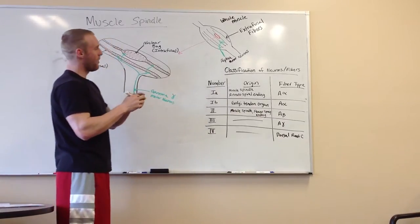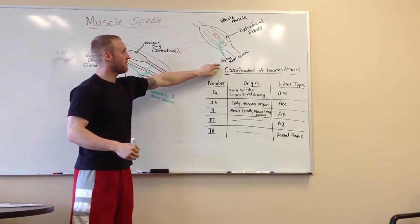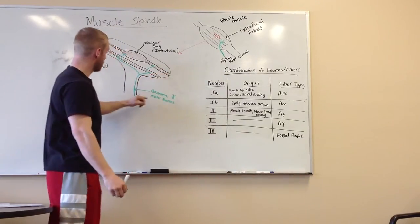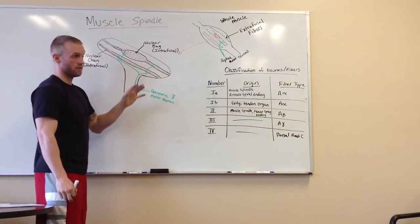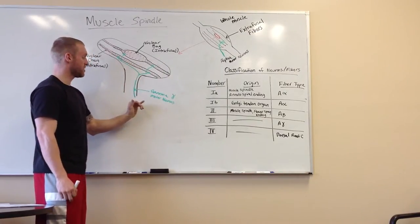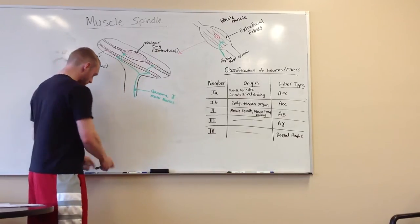So when our whole muscle contracts, our alpha motor and extrafusal fibers tighten, as well as the gamma motor neurons and the muscle spindles, it's just so they can detect the tension and the stretch. So one goes, the other one goes.